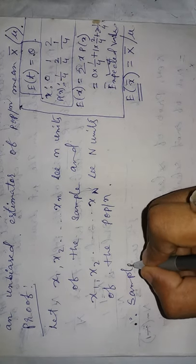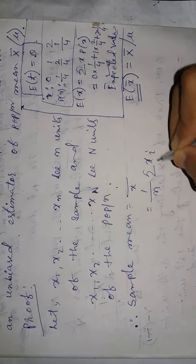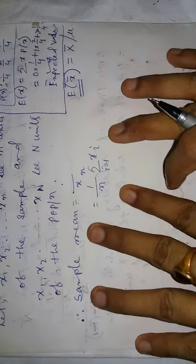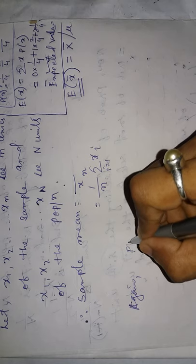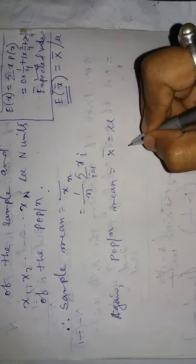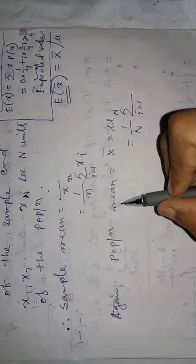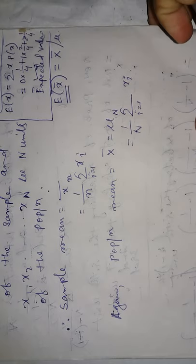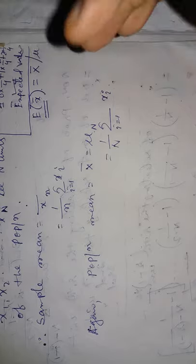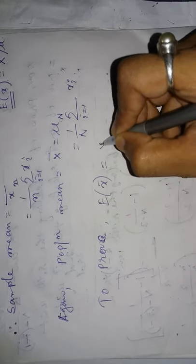Therefore sample mean: small x bar equals 1 by small n summation xi, i from 1 to n. This is the sample mean formula. Again, population mean will be capital X bar or mu. The formula is 1 by capital N summation i from 1 to N, and the units must be xi. So these are sample mean and population mean. Now I have to prove: expectation of small x bar equals capital X bar.